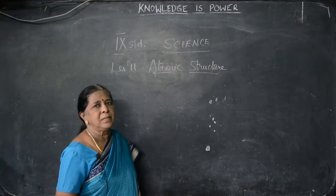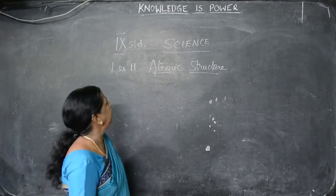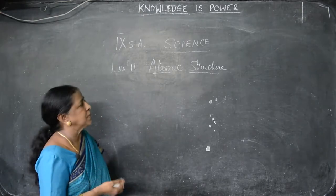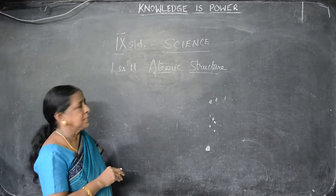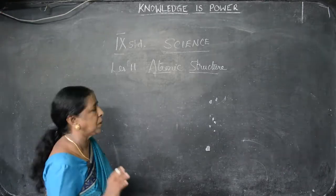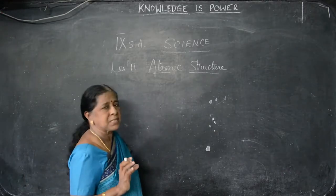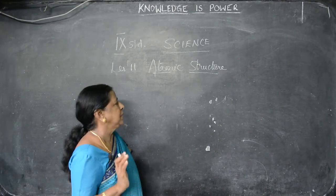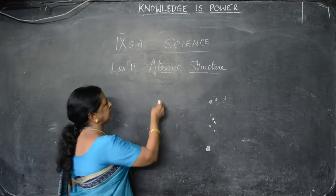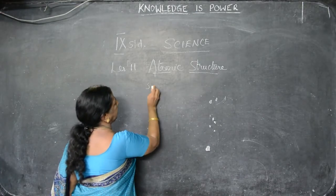Good morning children. Now we have to go for a new lesson — atomic structure, which is in chemistry. Already you know what is an atom. An atom is a small structure which cannot be subdivided further. What are the things present in the atom? What are the subatomic particles?